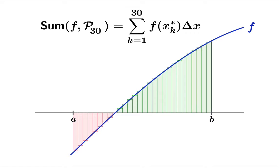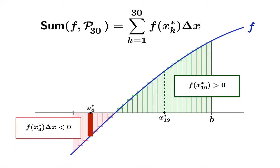So there's our midpoint sum with 30 divisions. Let's take a look at a couple of the sampling arguments. Here's x_4 star. We'll notice that the value of the function at x_4 star is negative, and that means when you multiply that quantity by delta x, you're going to get a negative quantity. So the fourth term in this Riemann sum is going to be negative. And similarly, here's x_19 star. The function value at that argument is positive, and so when you multiply by delta x, you'll get a positive contribution to the Riemann sum.